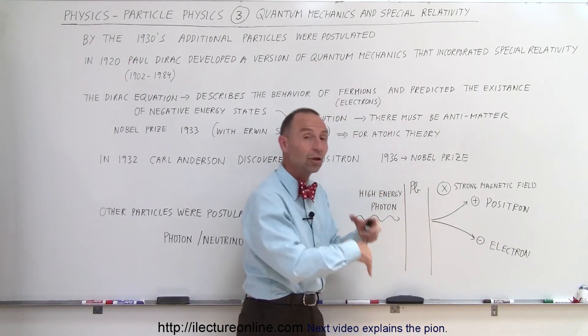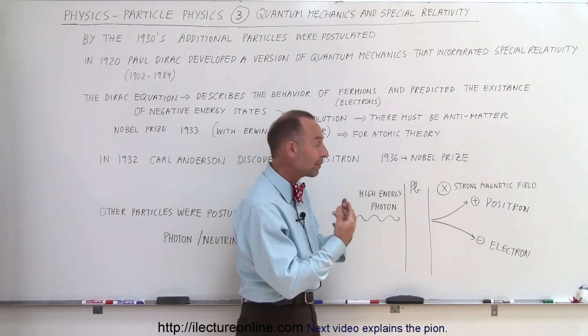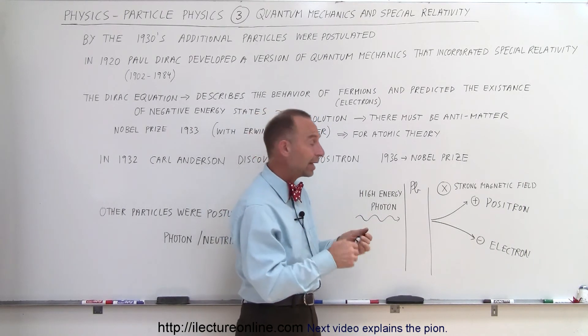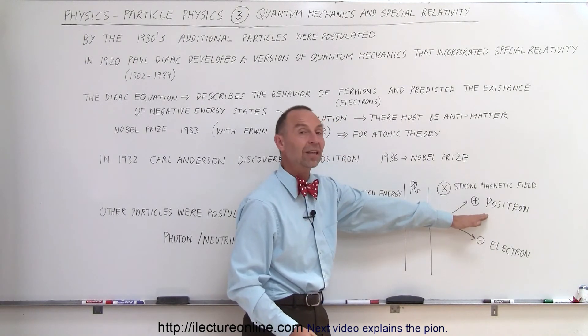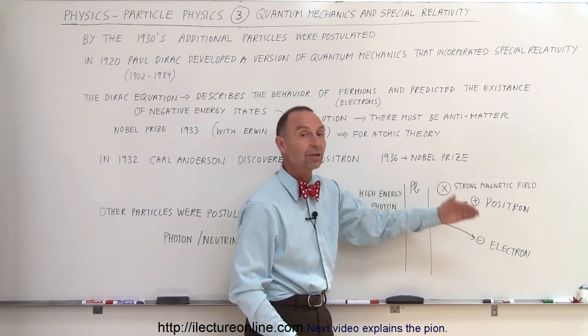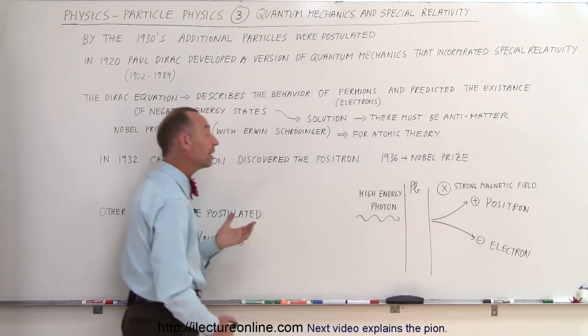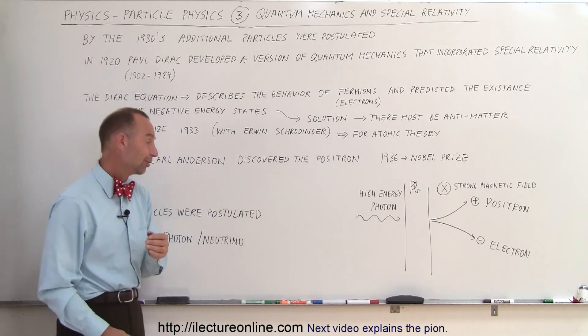This showed there were two of the same type of particles, one positive, one negative. And when they examined what those were, they knew this was an electron, this had to be the positive particle of the electron, the positron. That discovery earned him the Nobel Prize in 1936.